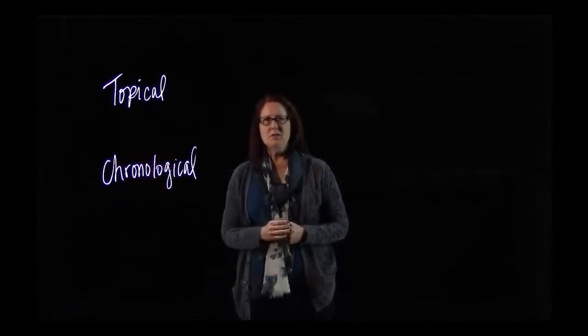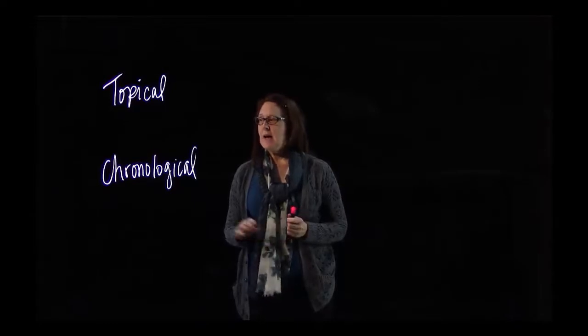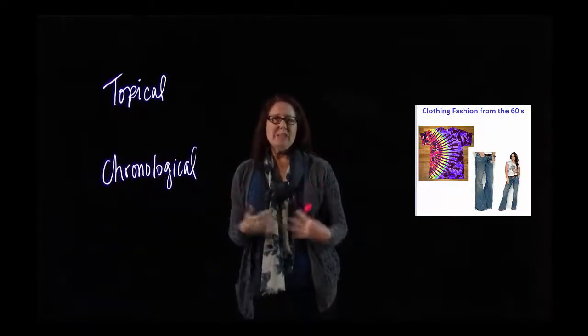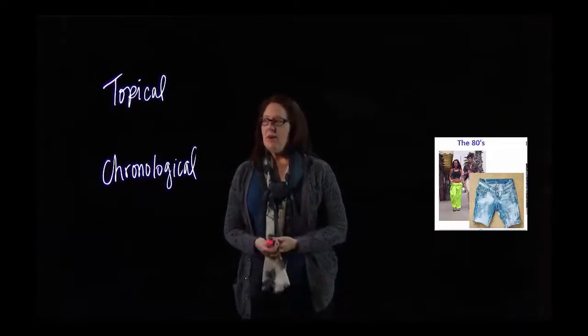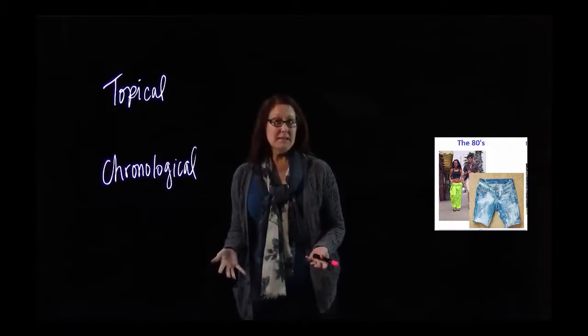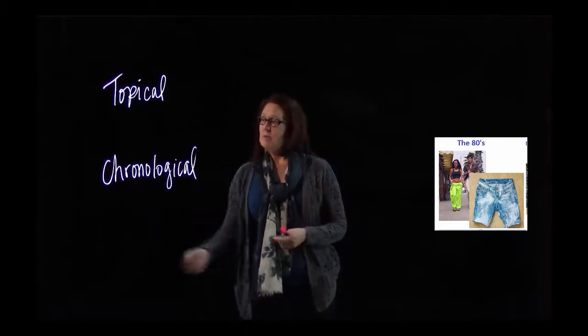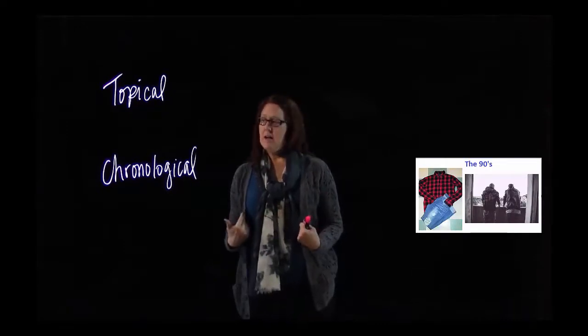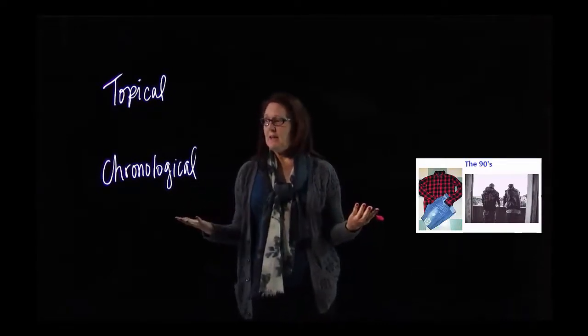Chronological is often used for demonstration speeches. Going back to the clothing fashion example: in the 60s, some of the main fashion was bell bottoms, bright colors, and tie dye. In the 80s, a very popular style was really bright neon colors, parachute pants, and acid wash jeans. Whereas in the 90s, the predominant fashion style was the grunge look, with a lot of flannel and darker colors to complement the grunge music scene.